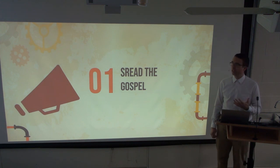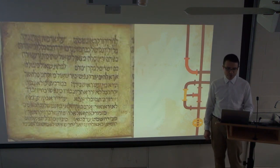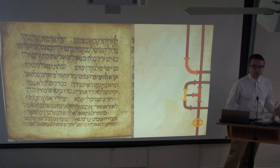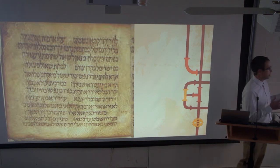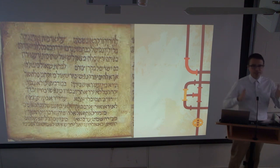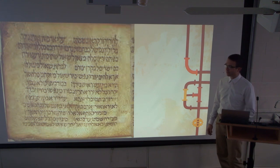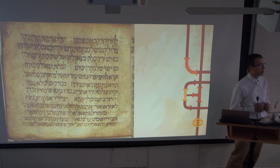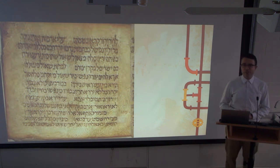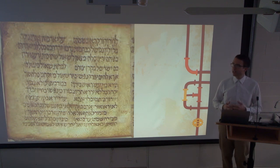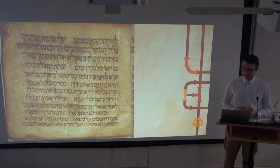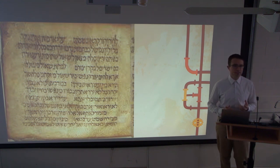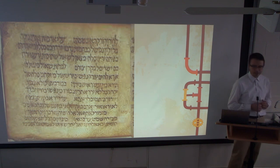First, a look at how technology has been used to spread the gospel. God's people have always been early adopters. The alphabet was brand-new technology in Moses' day. He would have grown up in the Egyptian court where they used pictographs — a symbol for every word — which was very difficult to learn because there are hundreds or thousands of symbols, putting literacy out of reach of most people.